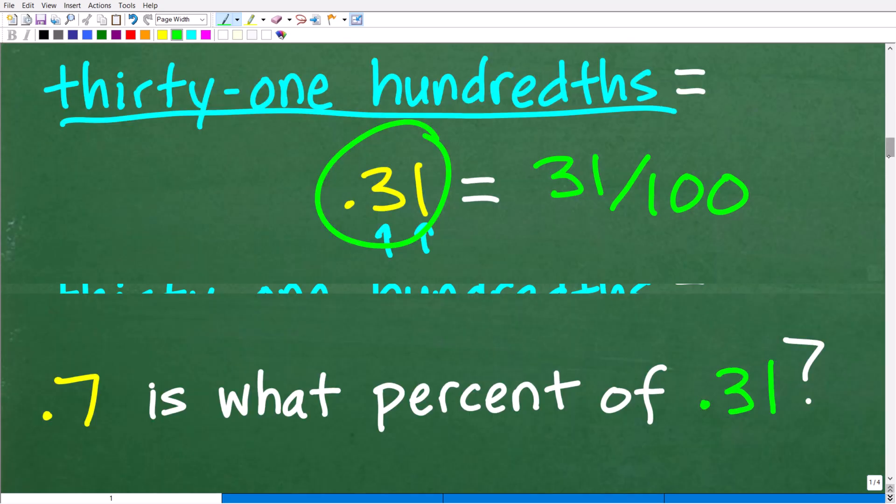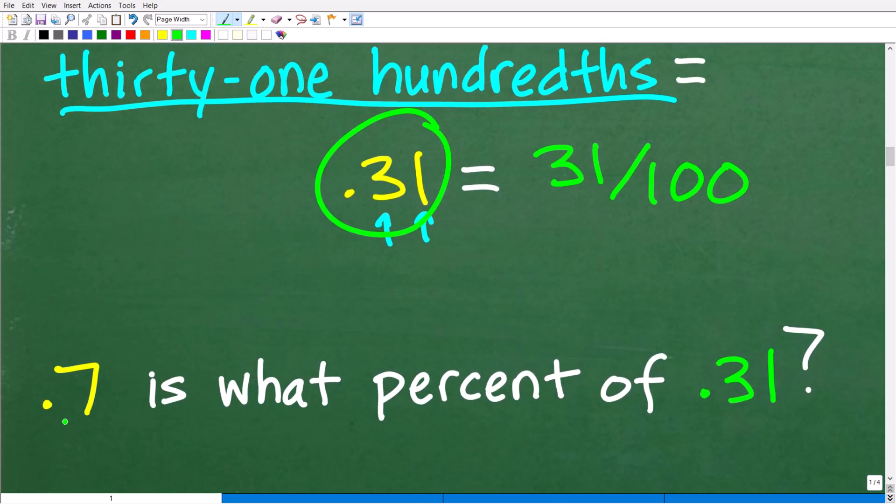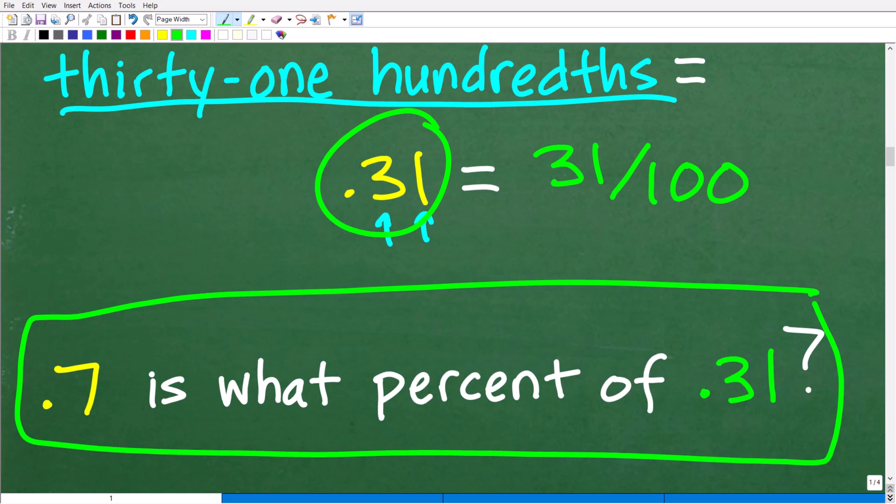Now because we are going to be using our calculators, and you don't have to use your calculator, but you should use it, it's just going to make our life a lot easier. I'm going to choose to work with decimals. So we're going to rewrite the problem this way. 0.7 or 7 tenths is what percent of 0.31 or 31 hundredths. So right now at this point, what we have is a lovely percent problem. And we went from reviewing place value, decimals, fractions, how to express different values using those different methods.